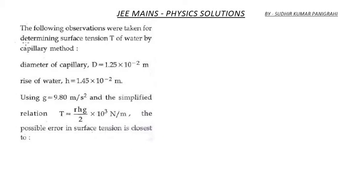The following observations were taken for determining surface tension of water by capillary method: diameter of capillary is provided, rise of water is provided, g is also provided, and a simplified relation surface tension T equals r h g divided by 2 into 10 raised to the power 3 newton per meter. The possible error in surface tension is closest to...